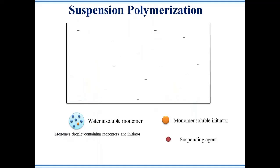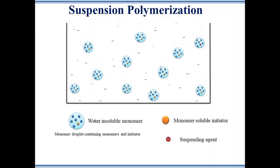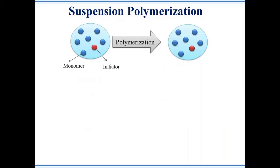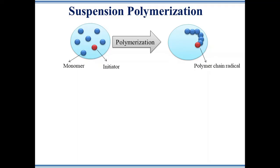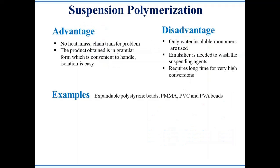Suspension polymerization is similar to bulk polymerization and could be considered bulk polymerization within a droplet. It is one of the most widely used polymerization techniques, also called bead or pearl polymerization. In this method, the initiator is dissolved in a hydrophobic monomer, and then the hydrophobic monomers containing initiators are mechanically suspended in water in the presence of a suspending agent. Polymerization is carried out inside the small droplet of liquid monomer. Finally, the polymer chain radicals undergo a termination step and form a bead-like polymer.